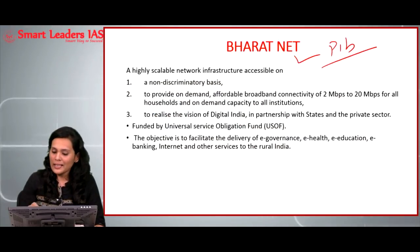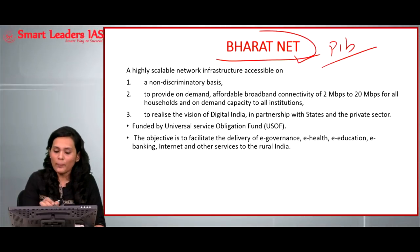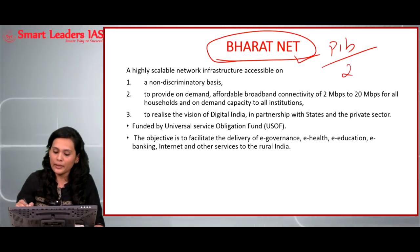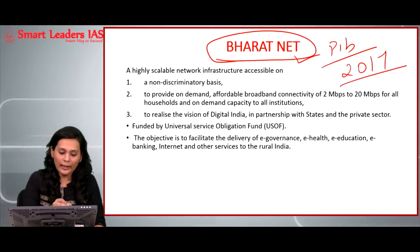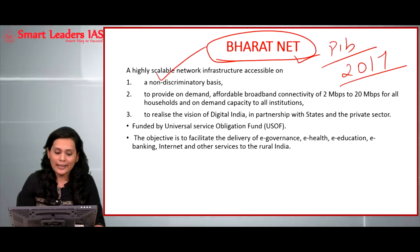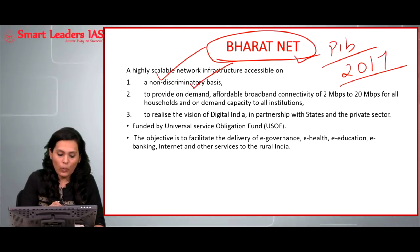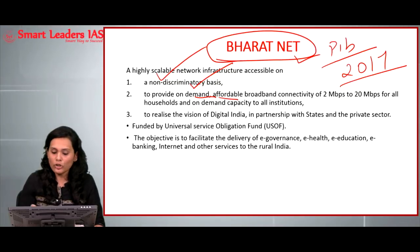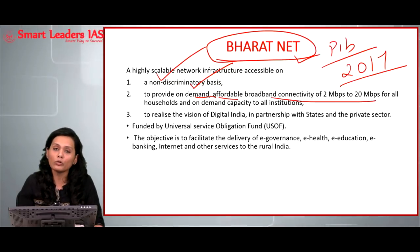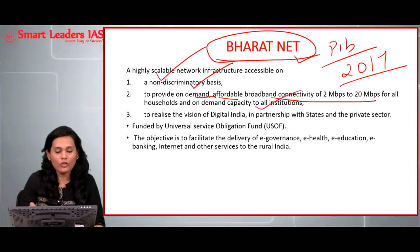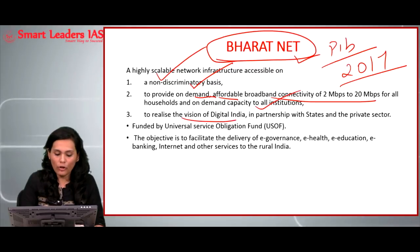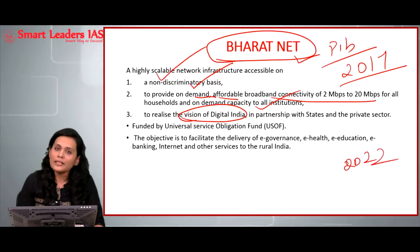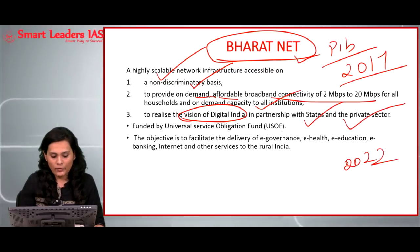The next article is taken from PIB, relevant from the prelims perspective — it is about the BharatNet Project of India. This project of national importance was started in the year 2017. It calls for bringing in a highly scalable network infrastructure, accessible on a non-discriminatory basis, providing on-demand affordable broadband connectivity. It will provide high-speed broadband connectivity of about 2 to 20 Mbps for all households as well as all institutions, helping India realize its vision of Digital India — complete digitalization by the year 2022. This program is in partnership with states and the private sector.